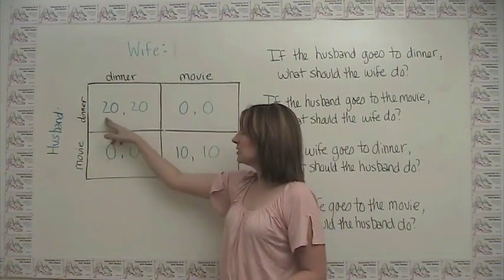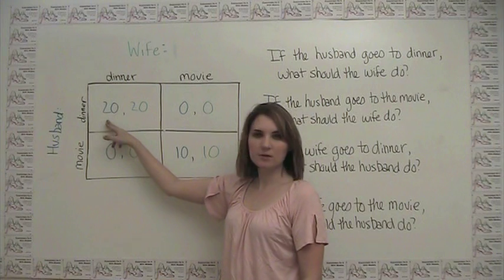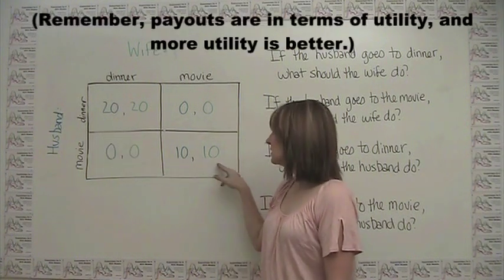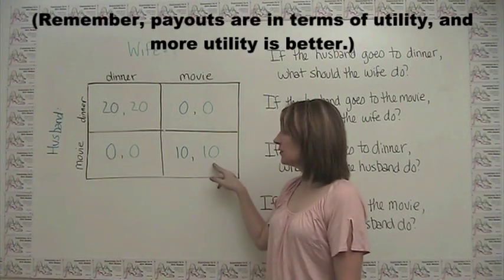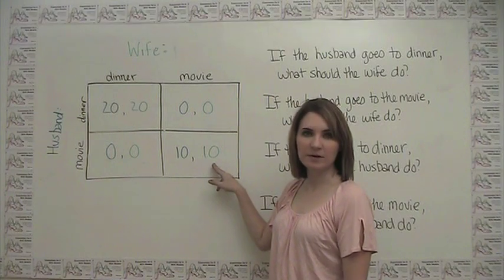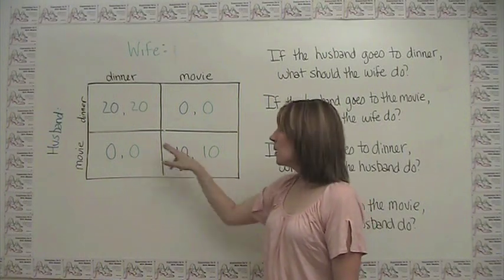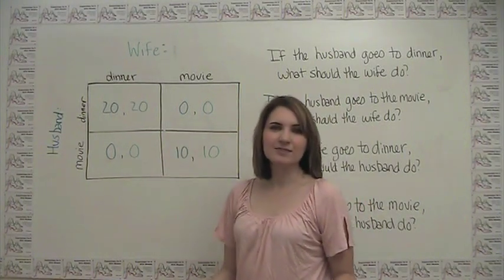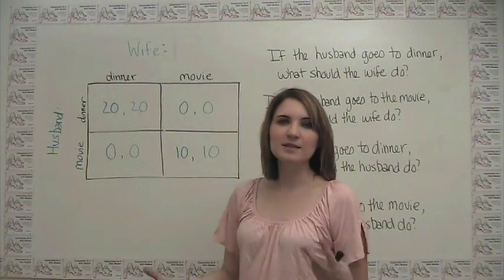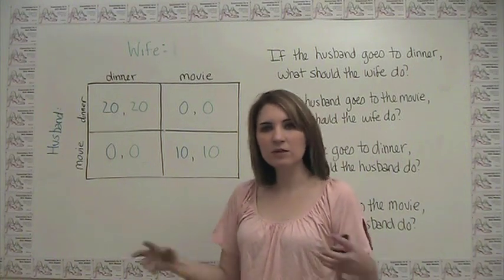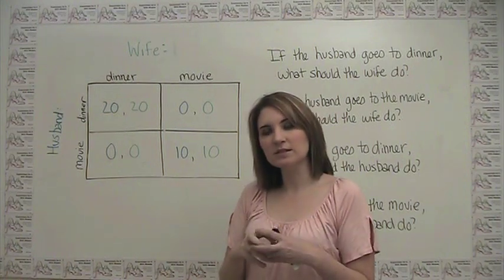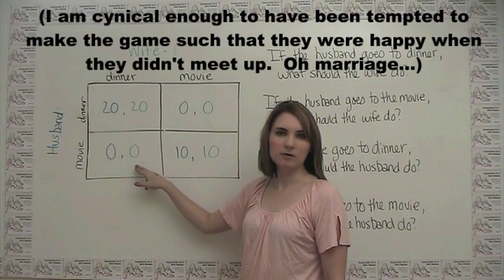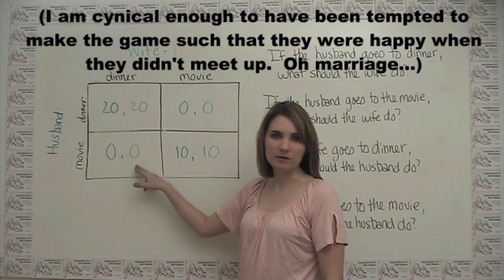If they both go to dinner, they both get a payout of 20. If they both go to the movie, they both get a payout of 10. But if one goes to one place and one goes to the other, they're kind of sad because what they really wanted was to be somewhere together. So if they don't match up, they both get a payout of 0.